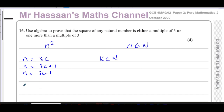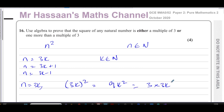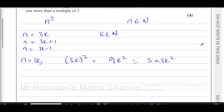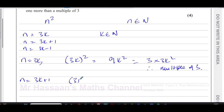Let's consider the case when n = 3k. When you square that, you get (3k)² = 9k² = 3 × 3k². So this is 3 times an integer, which means it is a multiple of three.